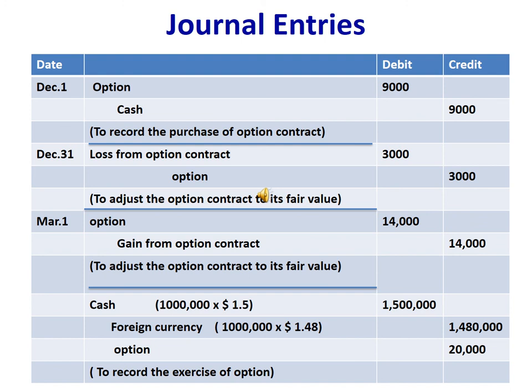On March 1st, we prepare two entries. First, to adjust the option contract to its fair value: debit Option $14,000 and credit Gain from Option Contract $14,000. Second, to record the exercise of the option by receiving cash according to the strike price and introducing foreign currency according to the spot price: credit Option $20,000.